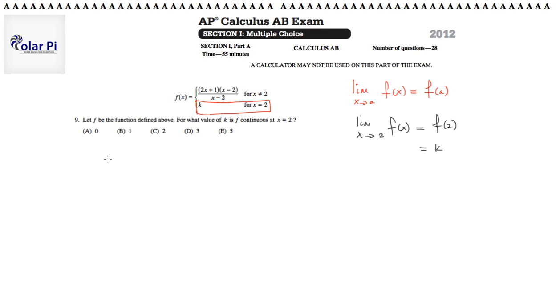And considering the limit as x goes to 2 of 2x plus 1 times x minus 2 over x minus 2,